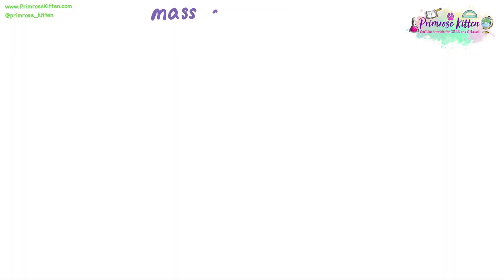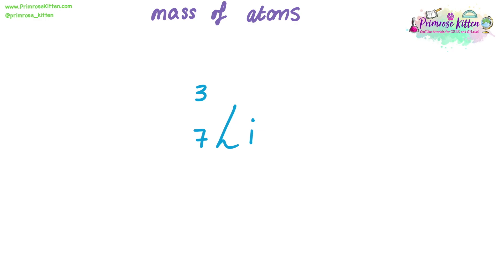We're going to start by taking a closer look at the mass of atoms. If we use lithium as an example, you may sometimes see on the periodic table elements laid out with two numbers alongside them. We're going to look in a bit more detail at what these numbers mean and why we include them next to the symbol.